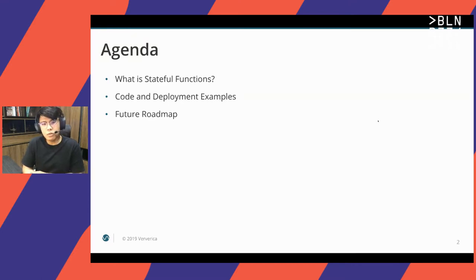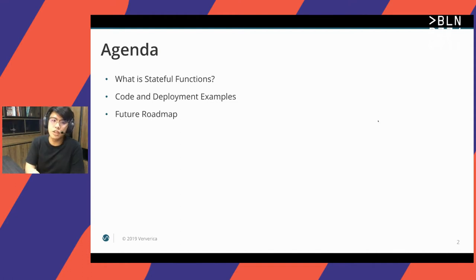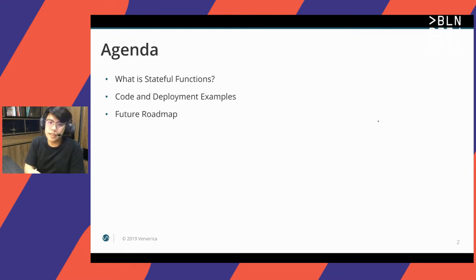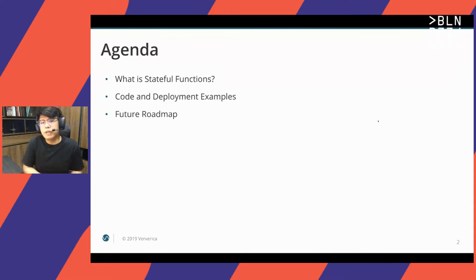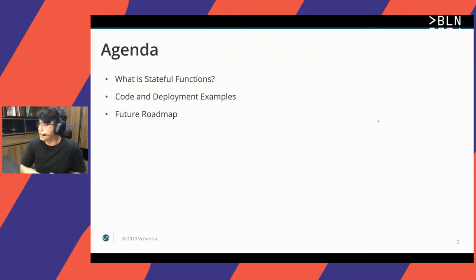Second, we'll take a quick brief overview of what code you would write with a stateful function application and how you would maybe deploy it with some quick examples. And last of all, we can take a quick overview of what you might be able to expect in some upcoming major versions, let's say 3.1 or 3.2, though it would be an estimation based on user feedback from the Apache Flink mailing lists for stateful functions.